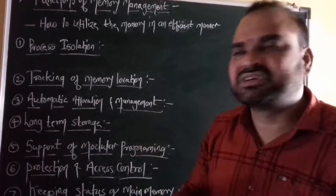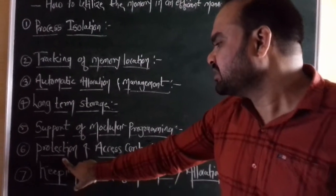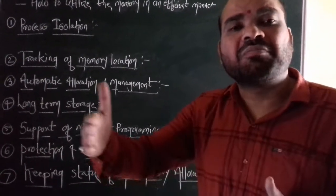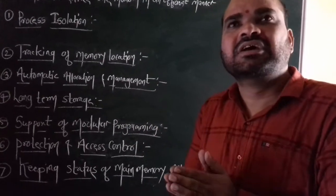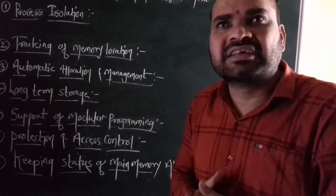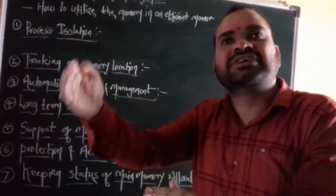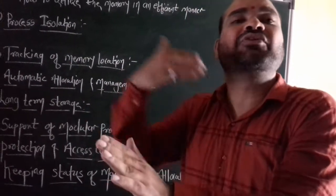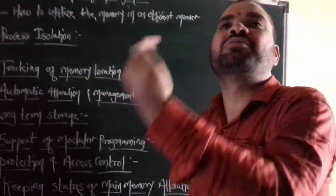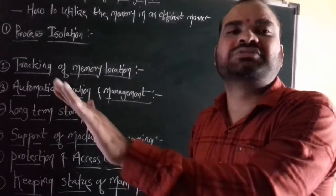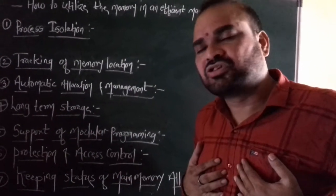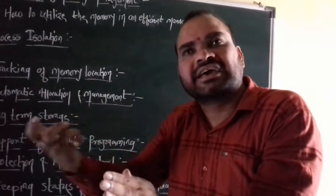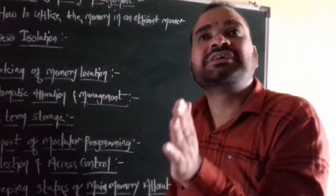Those particular parts are called modules. Instead of allocating memory for the entire program as a whole, memory is allocated to the particular part — the module. That is exactly the situation called support of modular programming. Now the next point is protection of access control. Protection of access control means that when a number of processes enter the machine, the operating system finds out the priority and importance of each process and provides protection to that particular important process.